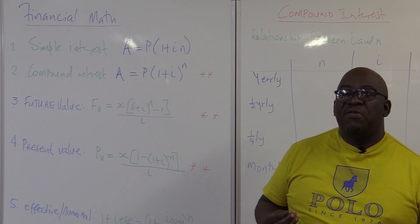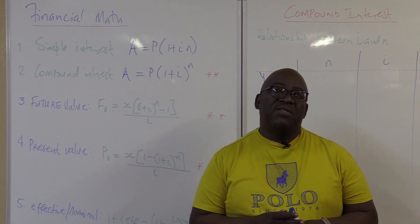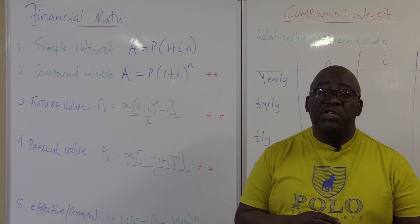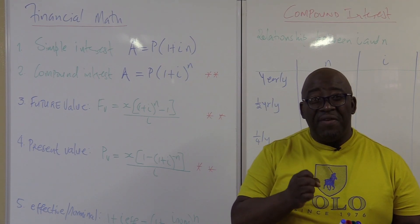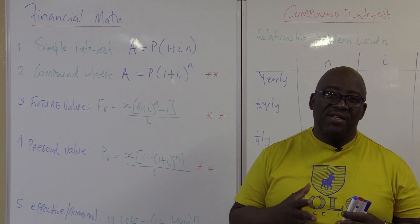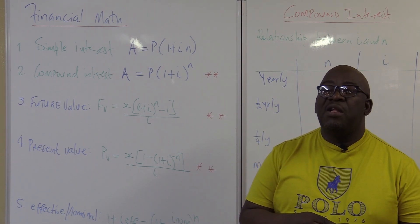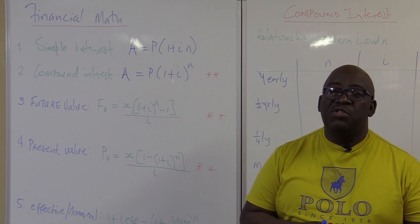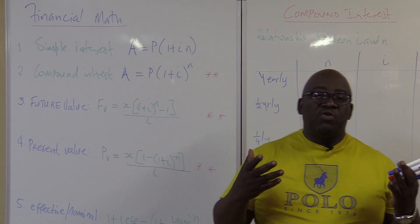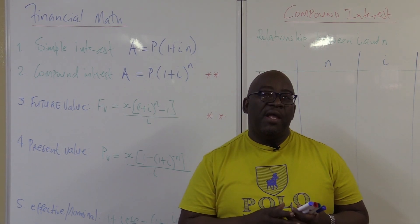Financial Maths is about 15 marks in your final examination, and these are very strong marks — if you can't get them you are likely not to get your distinction. It is only made out of five formulae.